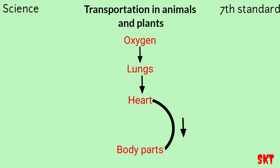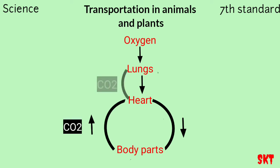All our body parts give out carbon dioxide. This carbon dioxide comes into our heart and the heart pumps the carbon dioxide into our lungs, and we exhale the carbon dioxide into the atmosphere. This is how circulation works in human beings and most animals. The main question now is: how are oxygen and carbon dioxide transported from one organ to another?